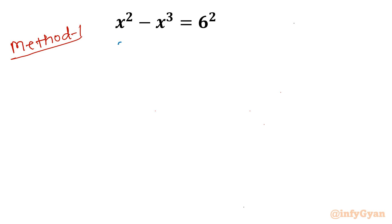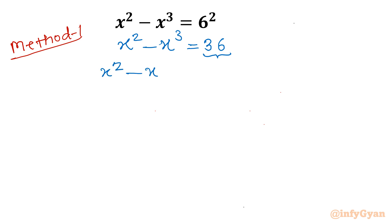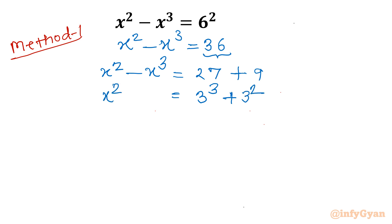I will write our equation as x squared minus x cubed equals 6 squared, which is 36. Now I will split this 36 in the manner of a cube and square summation. Can we write 36 as 27 plus 9? Yes — 27 is 3 cubed and 9 is 3 squared. So on the left-hand side we have square and cube terms, and on the right-hand side we have a cube term and a square term with an addition sign.